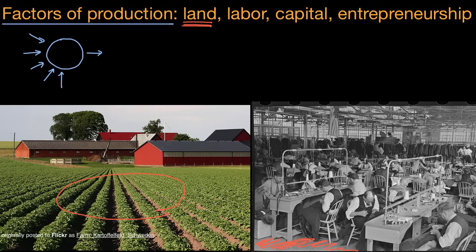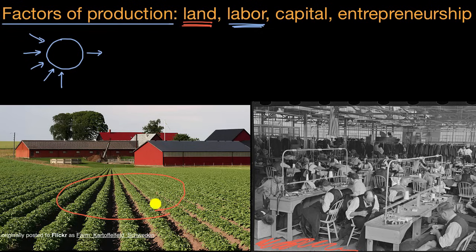Another important factor of production — and arguably they are all important — is the idea of labor. To produce many or most things, someone has to work on it. Someone had to plant these seeds, and they will have to harvest these crops. The labor is very clear here: you see people putting in work in order to produce the product.